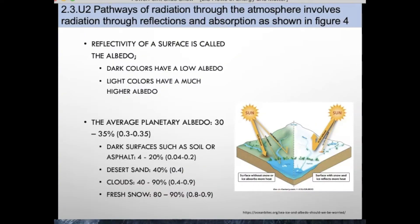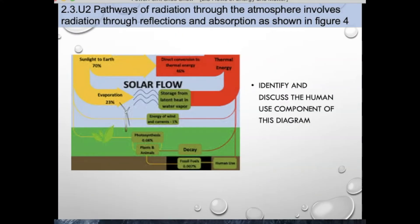While scattering could send light in any direction, reflection will send it back out into space. The most reflective aspects of our atmosphere are clouds, which can reflect between 40 and 90% of incoming light. The reflectivity of the surface is called the albedo — dark colors have a low albedo, while light colors have a much higher one. Pause at this point and identify and discuss the human use components of the diagram on your left.